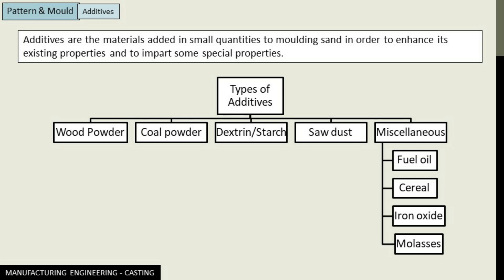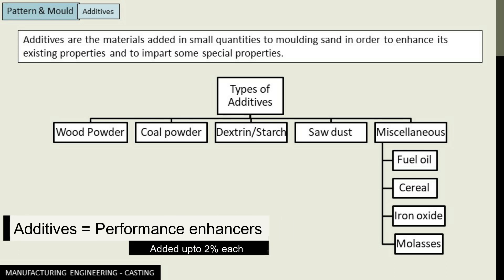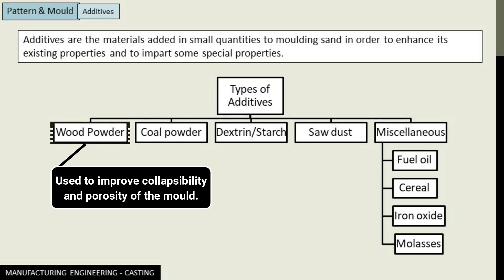Additives are materials added in small quantities to molding sand in order to enhance their existing properties and to impart some special properties as well. There are different types of additives ranging from wood powder to coal powder, dextrin starch, sawdust, and some miscellaneous types like fuel oil, cereal, iron oxide, and molasses. Let's understand them one by one, first being the wood powder.